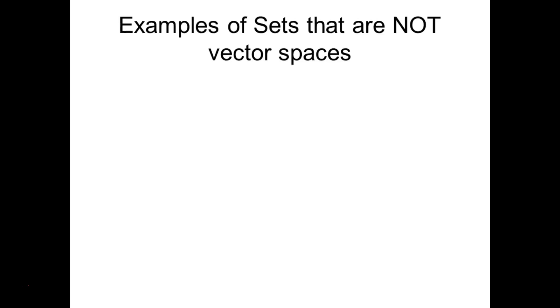Finally, part three of the vector space lecture. First we're going to look at some examples of sets that are not vector spaces — things you might think would be but aren't — and then some properties of vector spaces. Then we're going to create a strange notion of addition and multiplication and see how some of the axioms might still hold.